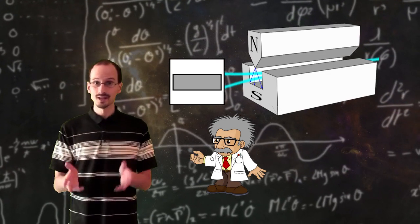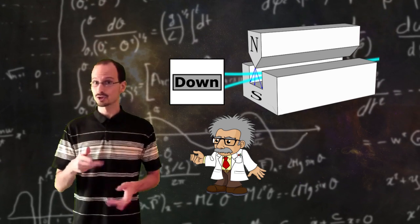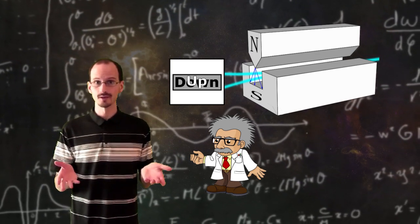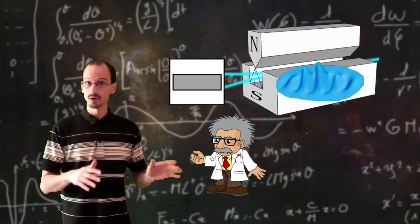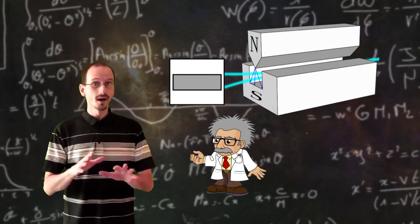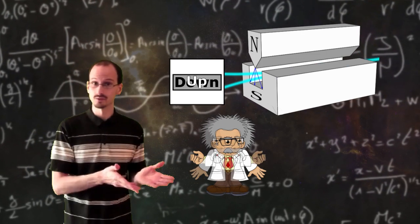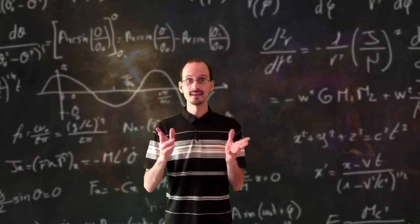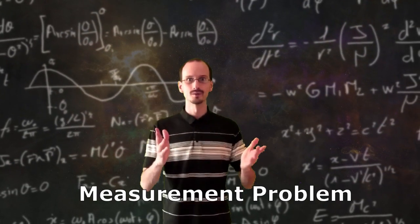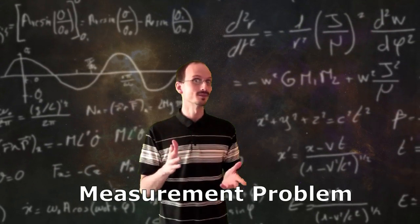When we take a measurement, the measuring instrument shows us one result or another. It doesn't show us a superposition of both. But the instrument is made of particles, and for that matter, so is the scientist doing the observing. So why isn't the scientist put into a superposition of seeing this result and that result? This is known as the measurement problem, and it's the central mystery of quantum physics that is yet to be resolved.